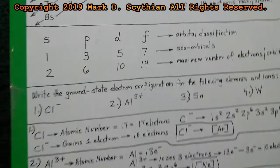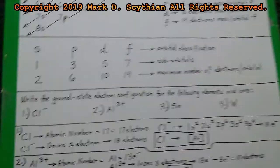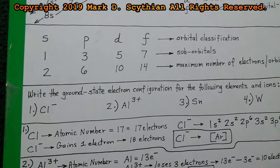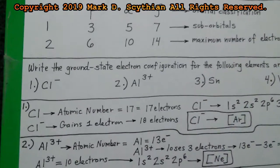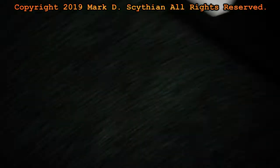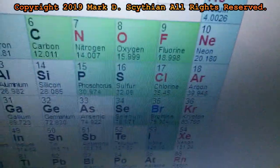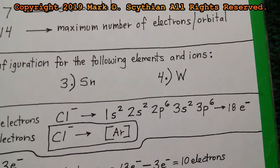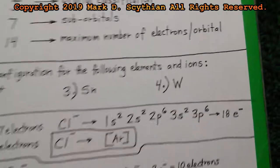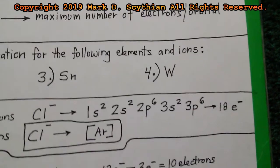Now we have a set of problems: write the ground state electron configuration for the following elements and ions. First, we have the chloride ion, Cl⁻¹, which is going to gain 1 electron. Going to the periodic table, chlorine has 17 electrons, but chloride has 18. We write a sequence to equal 18 electrons: 2, 4, 10, 12, 18.